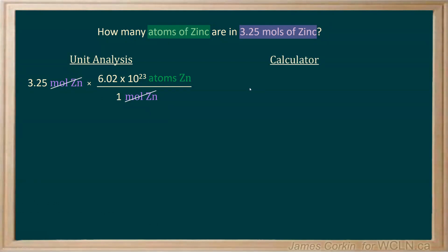How do I enter this in a calculator? I'm going to start with my 3.25. I'm going to multiply by 6.02. Exponent button 23. Hit the enter key. And the answer is 1.96 times 10 to the 24.